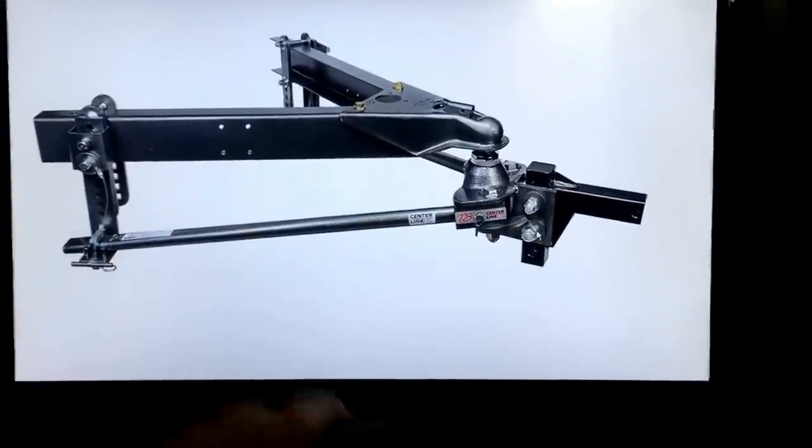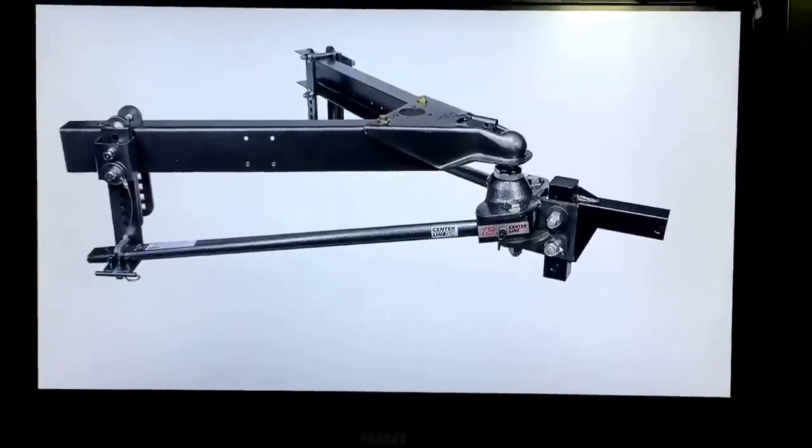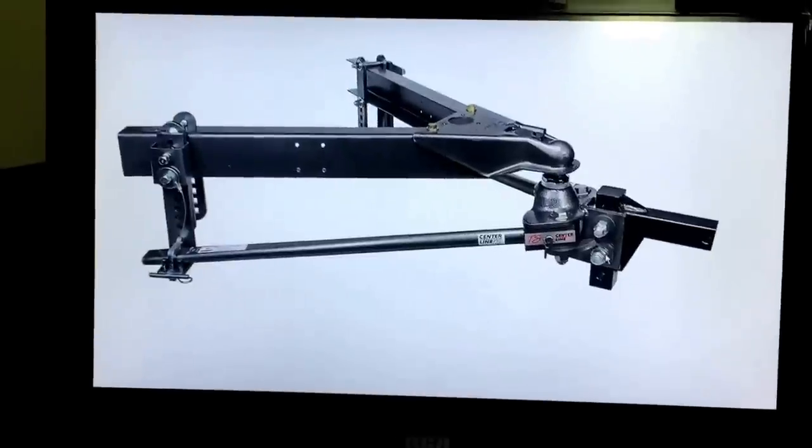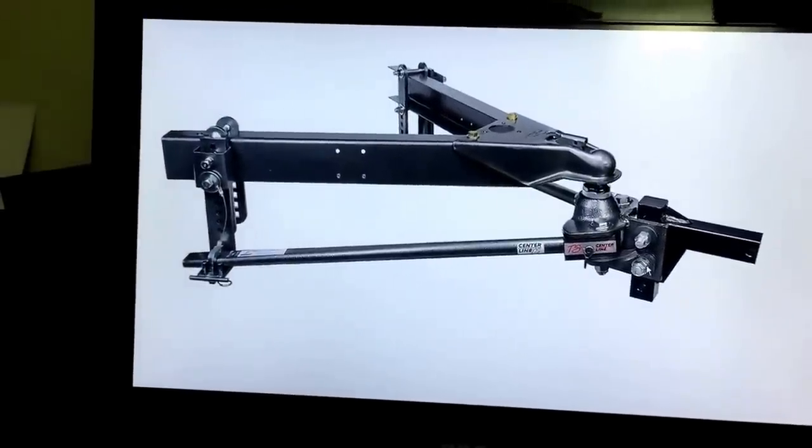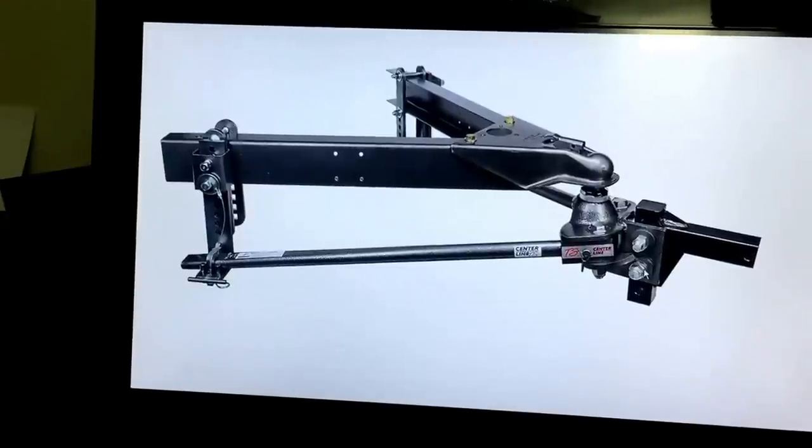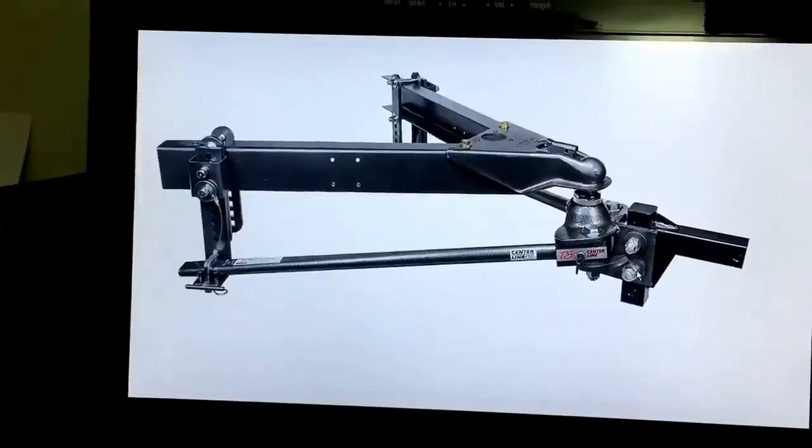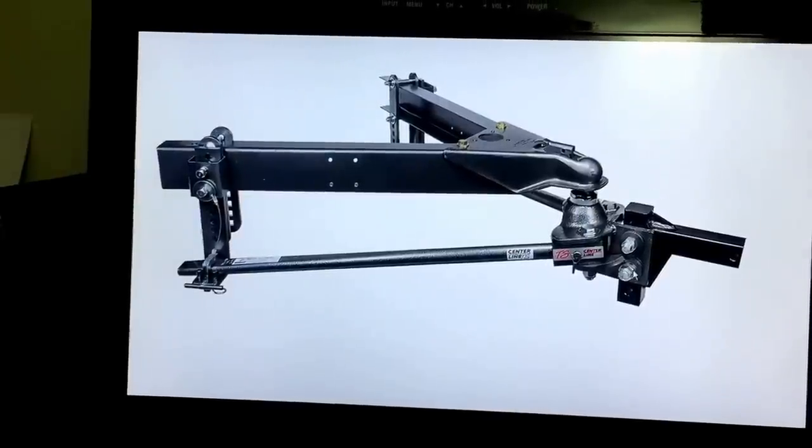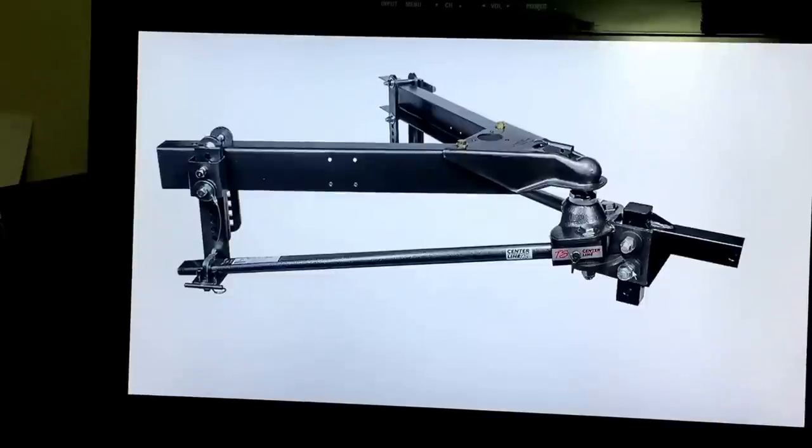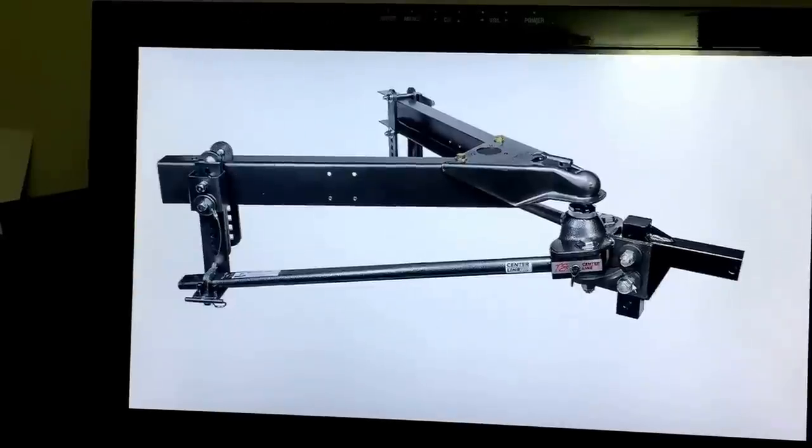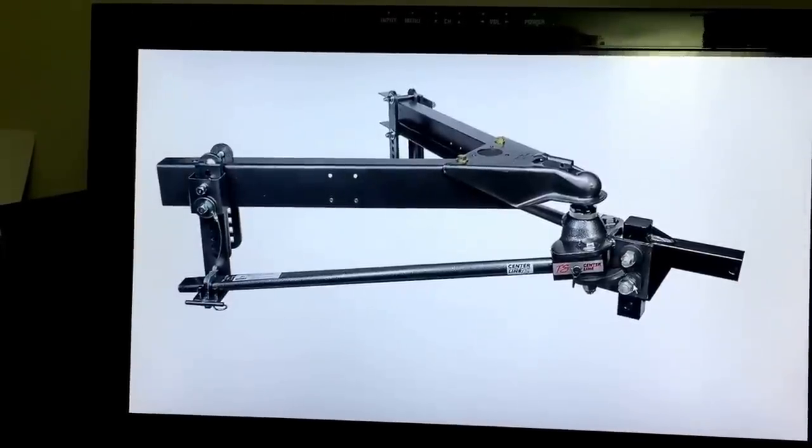Well, a class 4 hitch has one of these essentially built into the vehicle. It's an internal class 4 hitch. This, quite literally, is an external class 4 hitch upgrade. You put it into a class 3 hitch to bulk it up to the level of a class 4 hitch. When do you want to use one of these? With very few exceptions, pretty much any time you're towing any travel trailer. With very few exceptions. Unless your vehicle is just so drastically capable of outperforming the trailer that you don't need it. Even then, it still can't hurt.